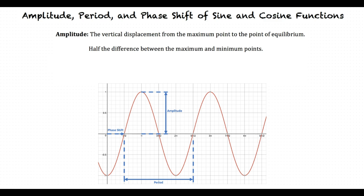When a graph repeats itself, it has a period. The period of a function is the horizontal distance of one of the repeated segments. A phase shift is the horizontal shift of the plot.